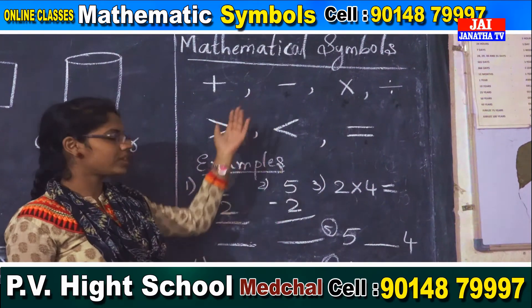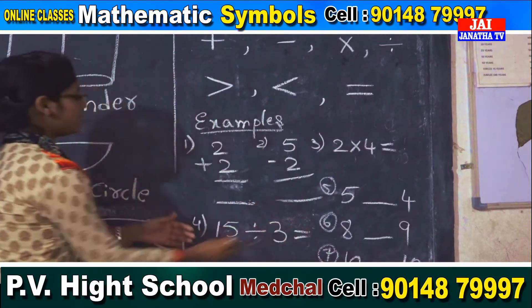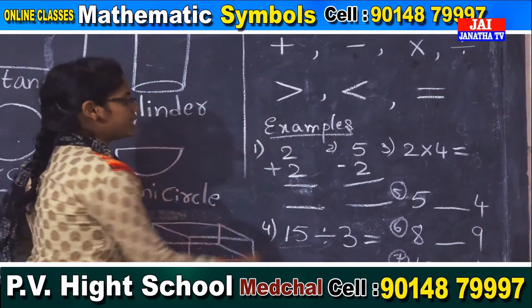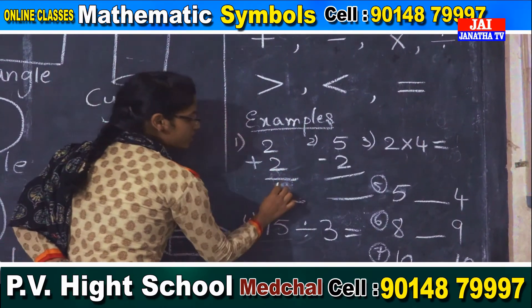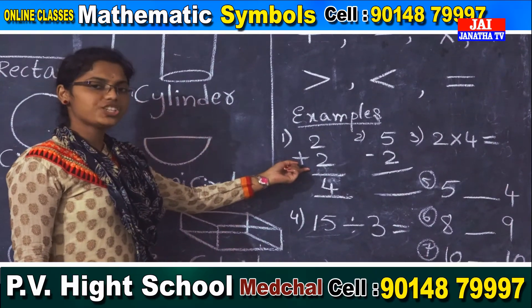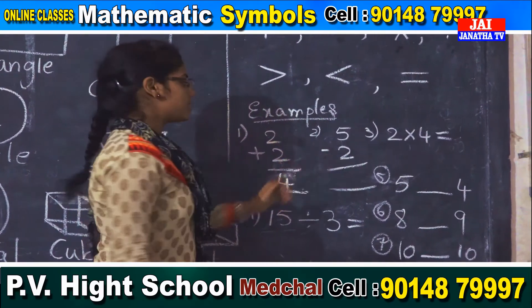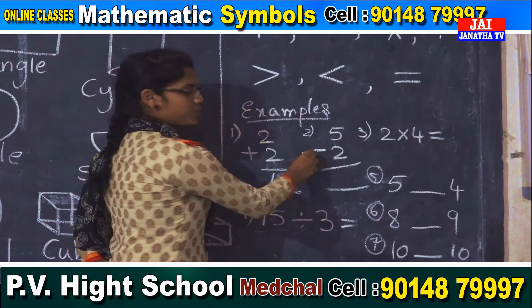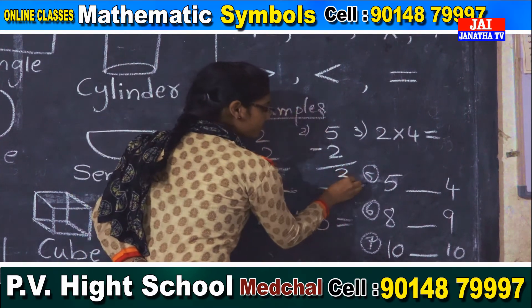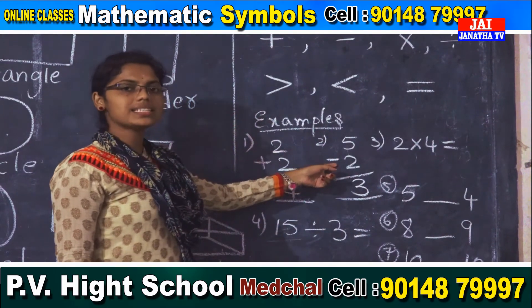Here are some examples based on these symbols. The first example is related to addition: 2 plus 2 equals 4. Here we use the plus addition symbol. The second example is based on minus: 5 minus 2 equals 3. Here we are using the minus symbol.